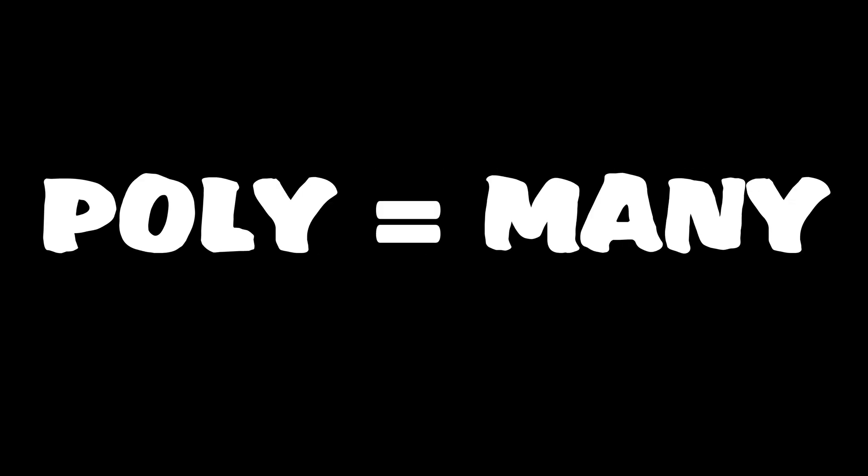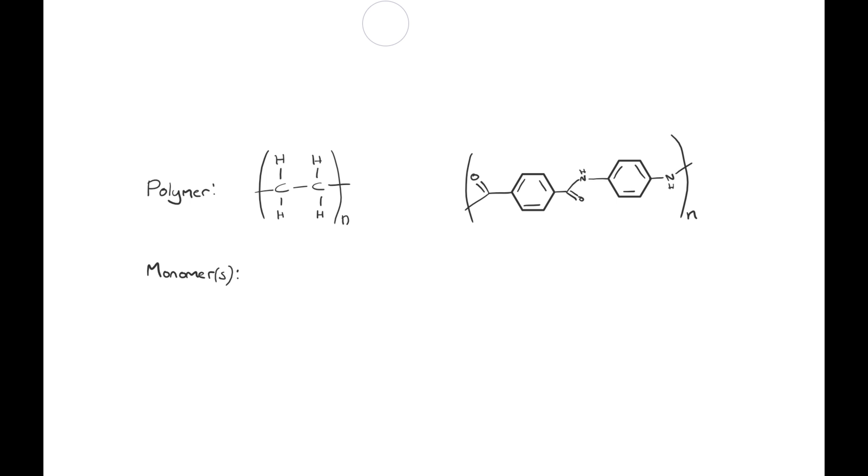Thus, a polymer is poly meaning many, mer, parts. A polymer can be made of a single monomer or many different monomers joined together to form a long chain.